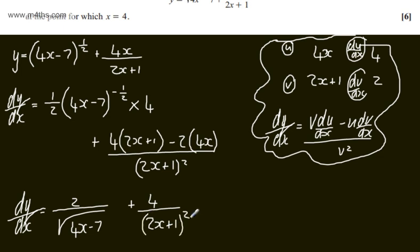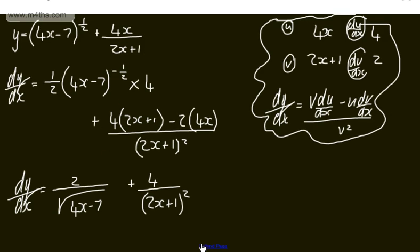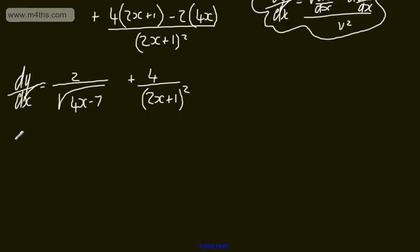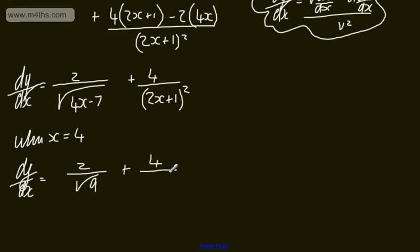So we're not asked to simplify, we're just asked for the gradient when x is equal to 4. So we can write, when x is equal to 4, dy by dx, the gradient will be 2 over, and we're going to have 4 lots of 4 minus 7, which is going to be 9. So we've got the square root of 9, plus 4 over, and we're going to have 9 squared.